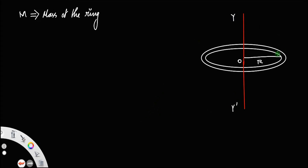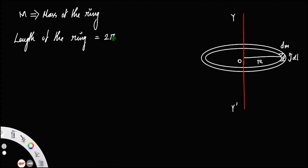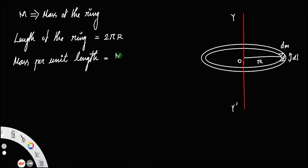For that, let us consider a small mass here; let us call that mass as dm, and the length of this small portion as dL. The total length of the ring will be the perimeter, that is 2πr. The mass per unit length will be the mass of the ring divided by its length, that is m divided by 2πr.